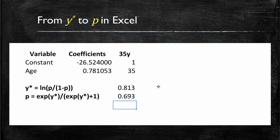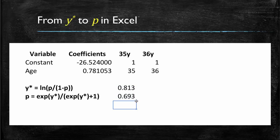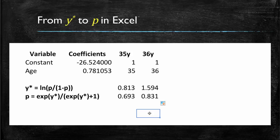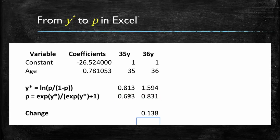Now let's see what happens at this age range if the customer grows one year older. Let's estimate the probability of a customer that is 36 years of age subscribing to this magazine. Note that my y-star now increased to 1.594, and the probability of this customer subscribing went all the way up to 83%. The probability increased by 13 percentage points, which is quite a bit.